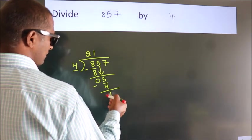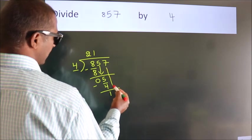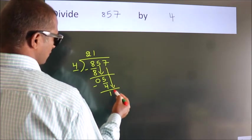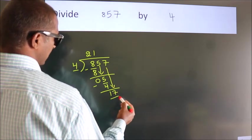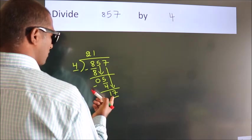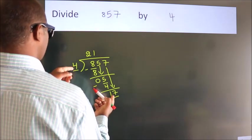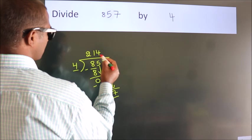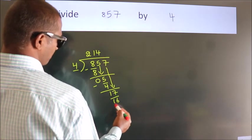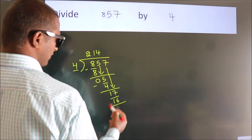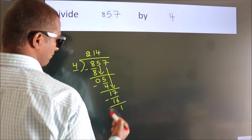After this, bring down the beside number. So 7 down, so 17. A number close to 17 in 4 table is 4 fours, 16. Now we subtract, we get 1.